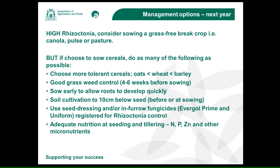Once you know what you've got and it's Rhizoctonia, here are some of the things that you can do. If there are very high levels or a lot of plants and patches affected with Rhizoctonia root rot, then the best thing would be to consider sowing a grass-free crop — that's canola, pulses, or grass-free pastures. But if you choose to sow a cereal, there are a number of options, and again there's not one single option you should do. You should do as many as you can — the more you do, the better off you're going to be.